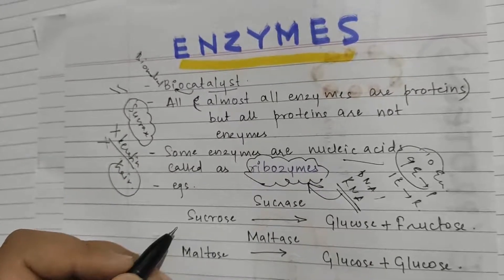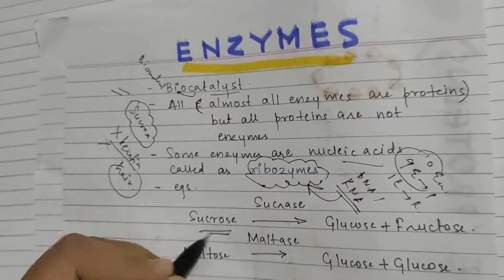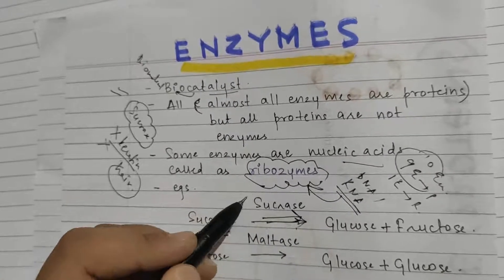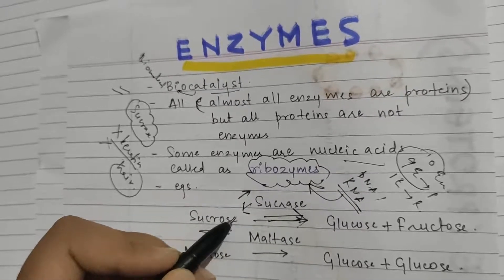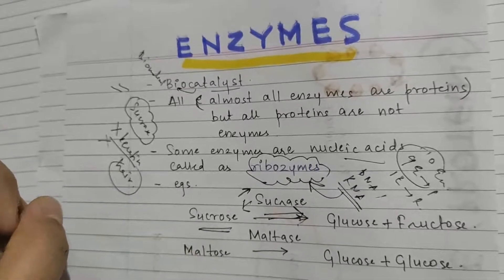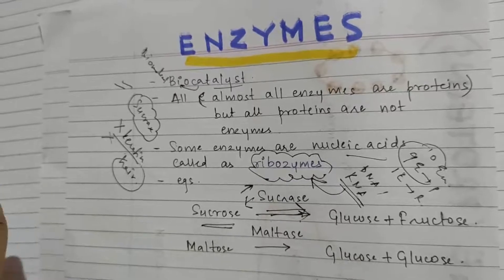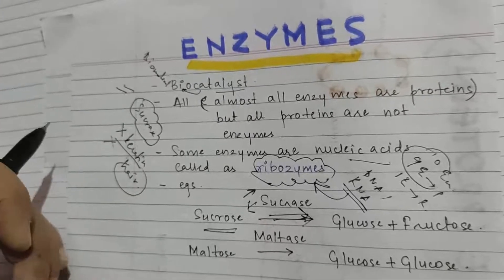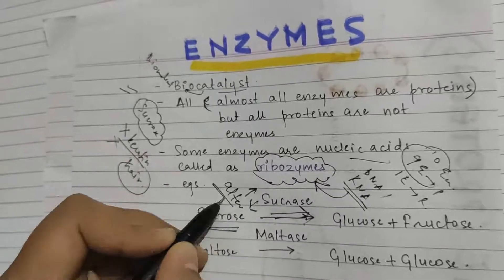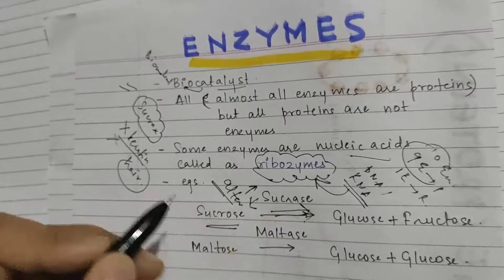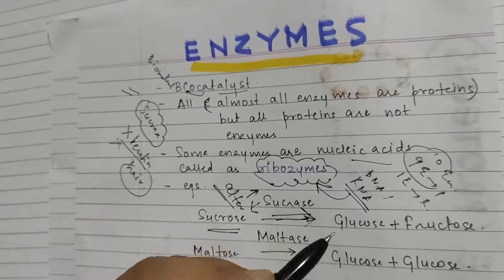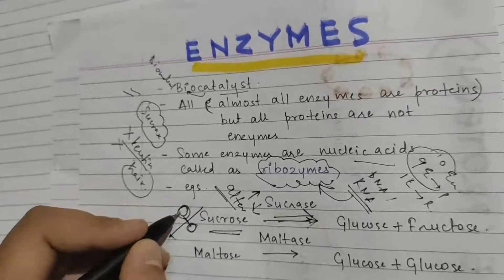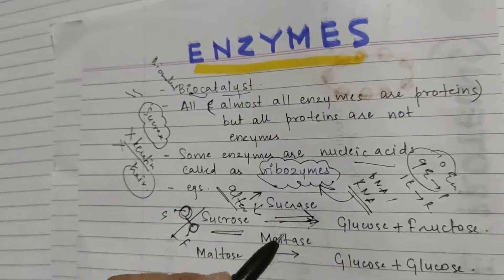Let us look at examples. Sucrose is the sugar we put in our tea or milk. To break down sucrose, we use an enzyme called sucrase. As a biocatalyst, it alters the reaction rate — speeding it up or down, like an accelerator on a vehicle. Sucrase breaks sucrose, a disaccharide, into glucose plus fructose.